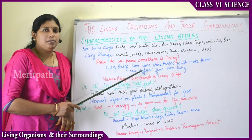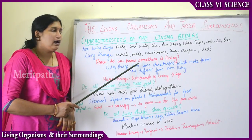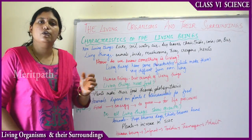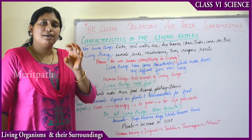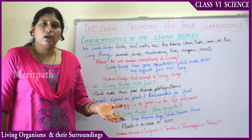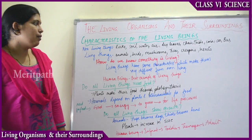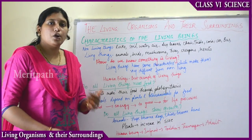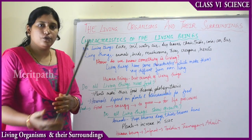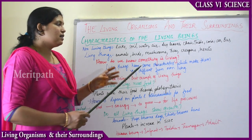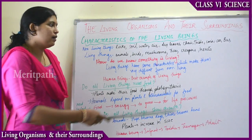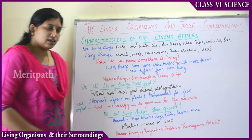For example, clouds in the sky seem to move from place to place, but they are non-living things. Mushrooms, creepers, and trees do not move from place to place, yet they are living. So living things are defined by the life processes going on within them, which make them different from non-living things.